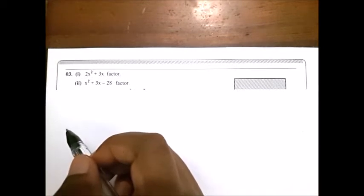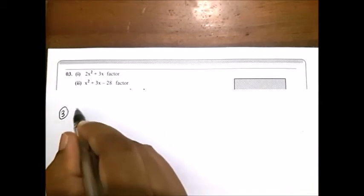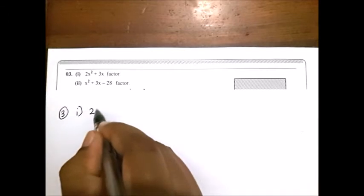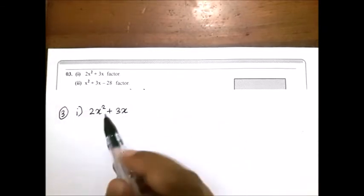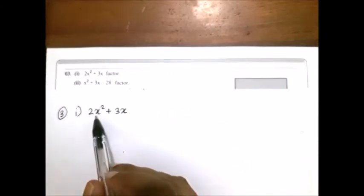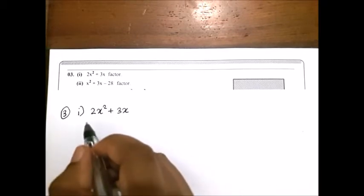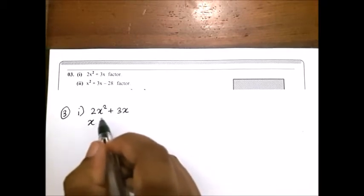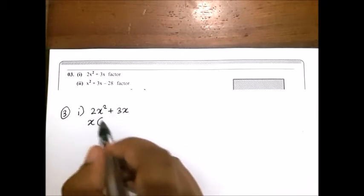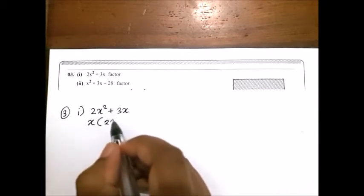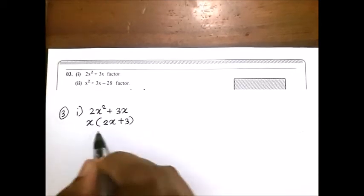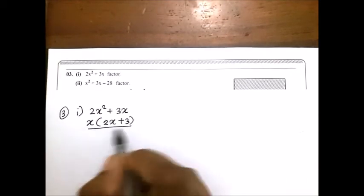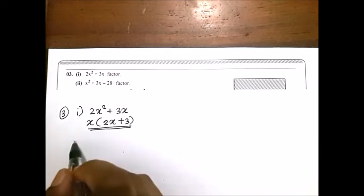Let's start the third question. First part: factorize 2x² + 3x. Here x is common to both terms. Take it out from the bracket. Remaining term is 2x in the first and 3 in the second. Answer: x(2x + 3). This is the answer for the first part.